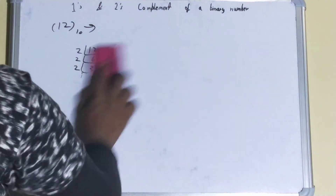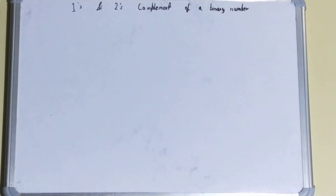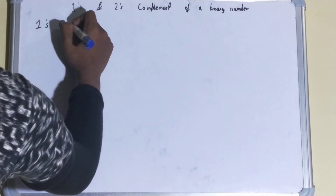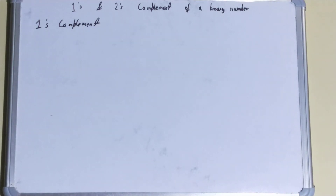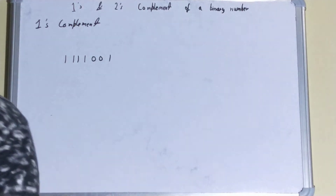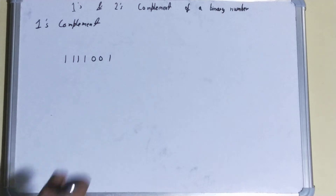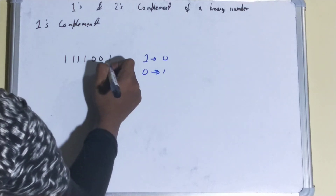Now let's come to the main topic: how to find out the ones and twos complement of a binary number. We'll talk about the ones complement first, then move to twos complement. Let's take an example — the number 1111001 — and find its ones complement. To do that, you simply make all the ones into zeros and all the zeros into ones.